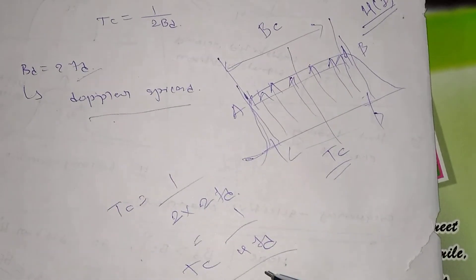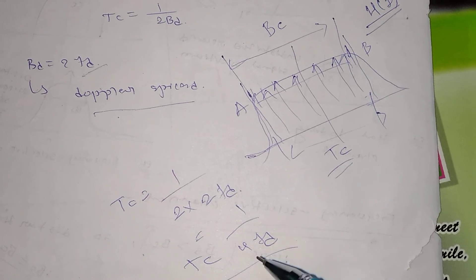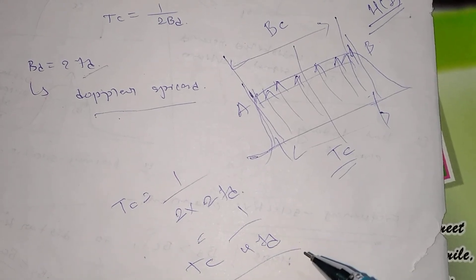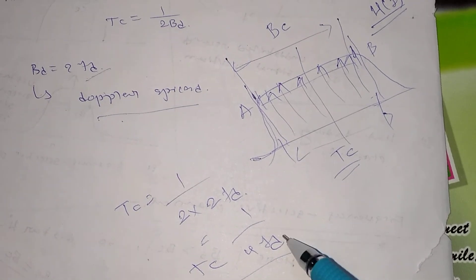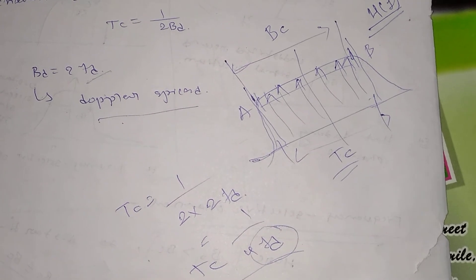So finally I can conclude that the coherence time is equal to 1 divided by 4FD. So that means it is inversely proportional to the Doppler shift frequency denoted as FD.